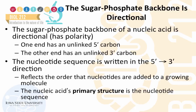As a result of this kind of linkage, the sugar phosphate backbone develops a directionality. One end has an unlinked 5' carbon and the other end has an unlinked 3' carbon. Therefore, the nucleotide sequence is written as 5' to 3'. This reflects the order in which the nucleotides are added to a growing nucleic acid molecule.